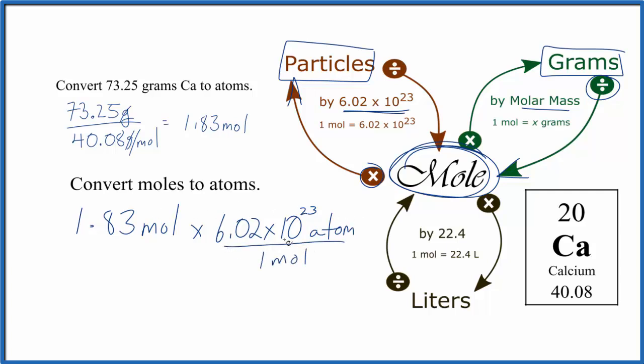So we multiply, and then we have moles on top and bottom. Those cancel out. We're left with atoms of calcium, and we could convert this to scientific notation if we're asked to do that.